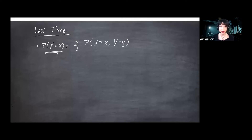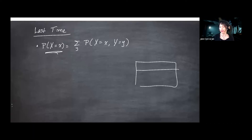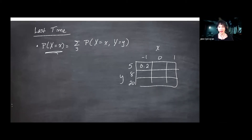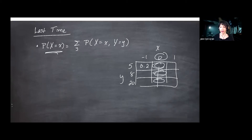There should be nine numbers in a table that sum up to one. If you want the probability that X equals zero, you would consider the entries in that column and add them together to get a sum in the margin. That's why we call them marginal probabilities.